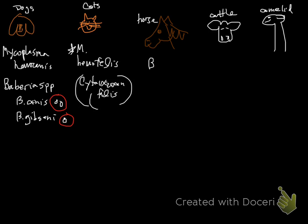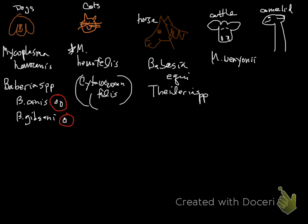In horses, the main one we see is Babesia equi — we're not going to talk about it in detail. You can sometimes also see Theileria, which is uncommon. In cattle, the hemotropic mycoplasma is not called Mycoplasma bovis — because that's a respiratory infection — it's called Mycoplasma wenyonii. We also see a Babesia and Theileria in cattle. Note that horses do not get hemotropic mycoplasma.